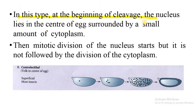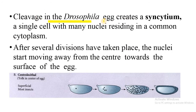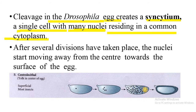At the beginning of cleavage, the nucleus lies in the center of the egg, surrounded by a small amount of cytoplasm. Mitotic division of the nucleus starts but is not followed by division of the cytoplasm. For example, cleavage in the Drosophila egg creates a syncytium — a single cell containing many nuclei residing in a common cytoplasm.